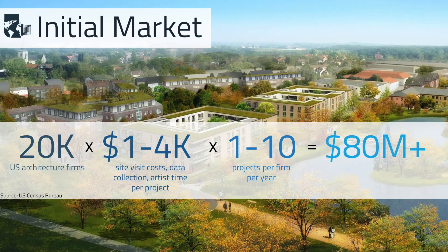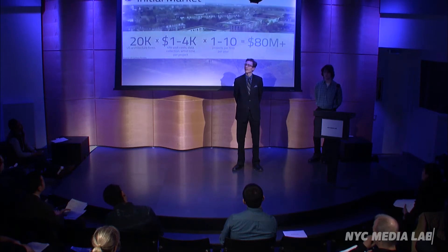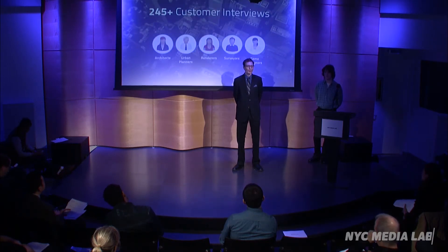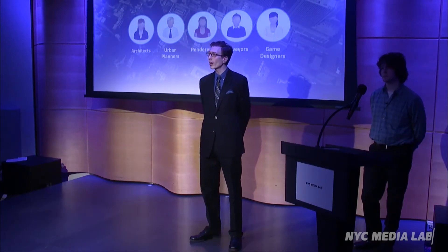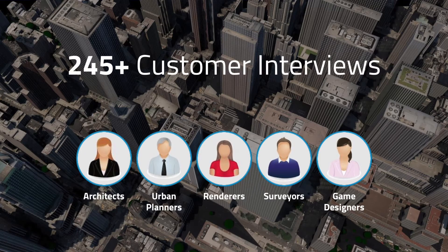Focusing on the architecture market, we've talked to architects and understood that they work on anywhere from one to ten projects per firm per year. For each of those, they have to spend from $1,000 to $4,000 or more creating these models. This is a problem at 20,000 architecture firms in the US today. To understand these numbers and validate the problem, we've talked to over 245 professionals in architecture, urban design, and other fields over the last ten months.